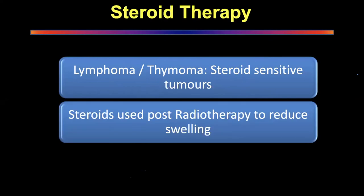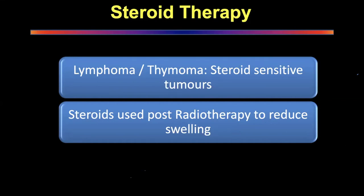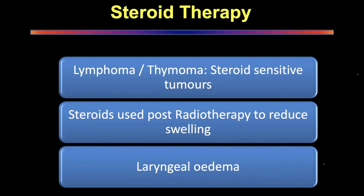Steroids are used in lymphomas and thymomas. If you cannot offer SVC stenting or radiotherapy, give steroids — particularly when thinking of lymphoma and thymoma — as there is some regression of the tumor that might be enough to relieve symptoms temporarily, allowing you to plan full therapy later. Steroids are also used in post-radiotherapy patients to reduce swelling, because radiotherapy can reduce tumor size but cause laryngeal edema — so respiratory symptoms may progress even as the compressive symptoms improve. Steroids are used aggressively for laryngeal edema during radiotherapy.